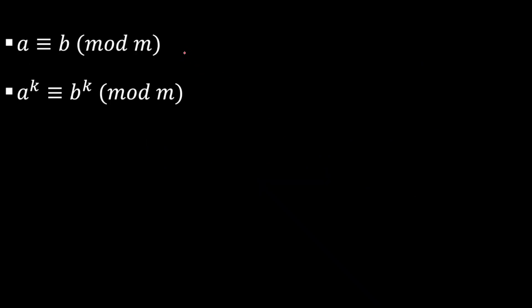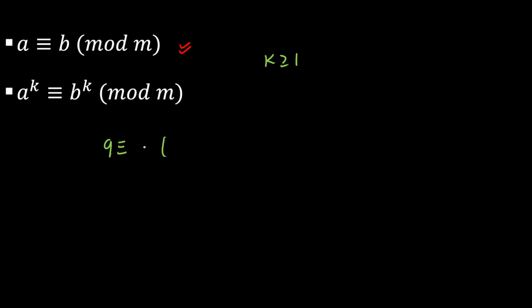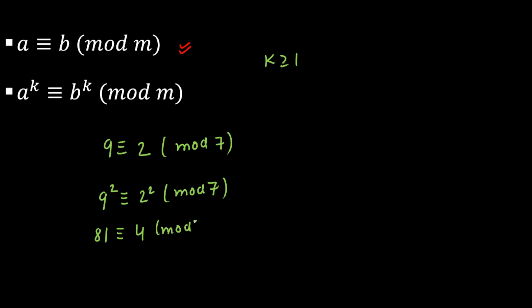Now the last and most important property, which I'm going to use in lecture 2: if A is congruent to B mod M, then A raised to the power K is congruent to B raised to the power K mod M, where K is greater than or equal to 1. For example, 9 is congruent to 2 mod 7. If I raise to power 2, then 9 squared is congruent to 2 squared mod 7, which is 81 is congruent to 4 mod 7. The nearest multiple of 7 is 77, and 81 minus 77 gives remainder 4. This holds for 9 cubed, 9 to the power 4, 9 to the power 5, and so on.